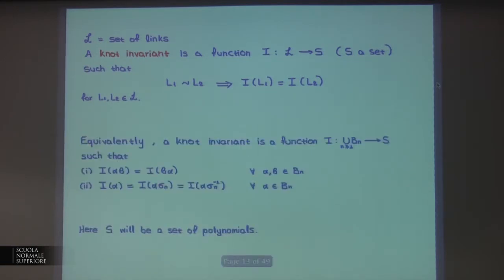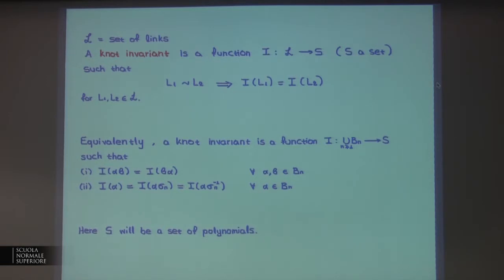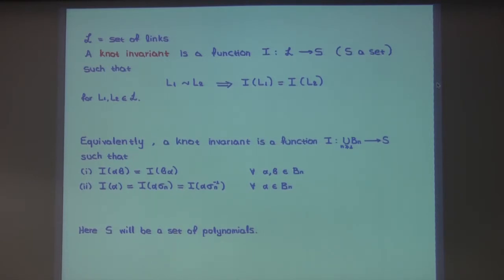If we translate this to braids using Markov's theorem, the definition of a knot invariant becomes: a function on the union of braid groups such that the function takes the same values on alpha*beta and beta*alpha (stable under conjugation), and also the value on alpha equals the value on alpha*sigma_N and on alpha*sigma_N^{-1}. If a function satisfies conditions 1 and 2, then you have a knot invariant.